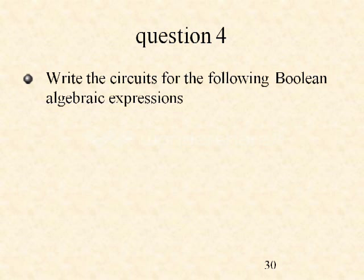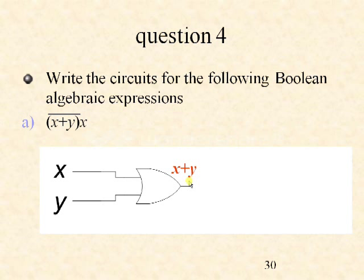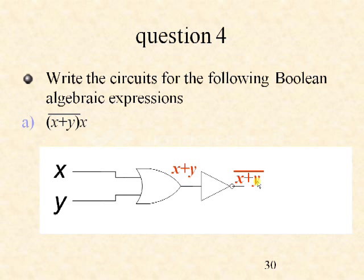Write the circuits for the following Boolean algebra expression: (x plus y) whole complement · x. First, inputs x and y are taken to an OR gate to get x plus y. This output is given to a NOT gate, giving x plus y whole complement. This is then given as input to an AND gate along with x, giving (x plus y) whole complement · x. Thank you.